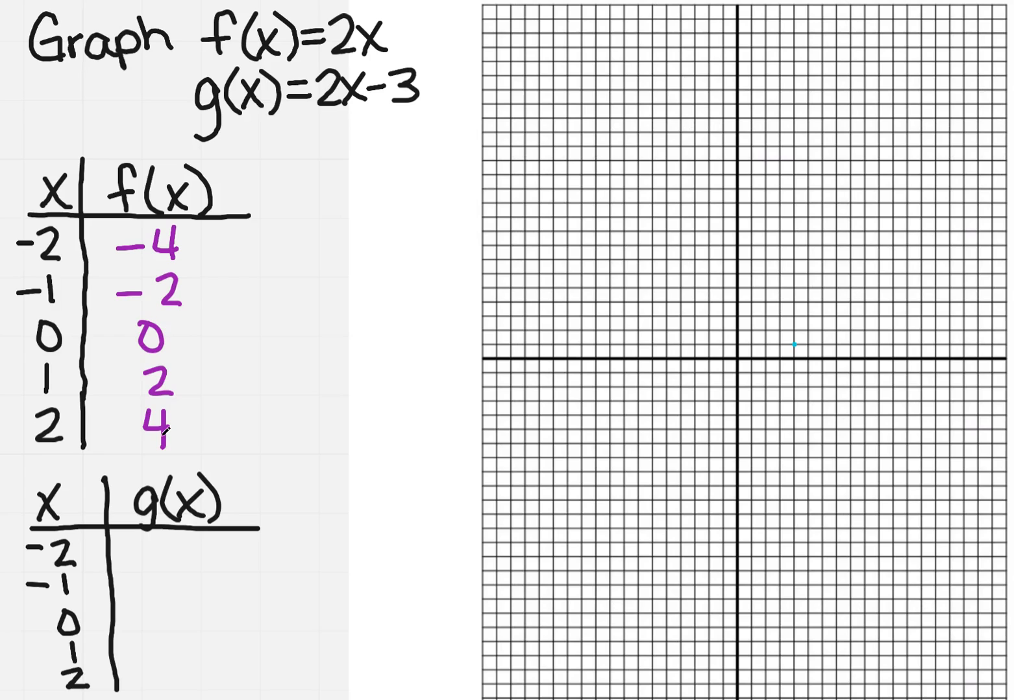And then I'm going to do the same thing for g of x, but what I notice is I've already found 2x. So I'm just going to take the numbers I got in f of x, and now I'm going to subtract 3 from each of those. So I'm kind of running out of room. So minus 7, minus 5, minus 3, minus 1, and 1.